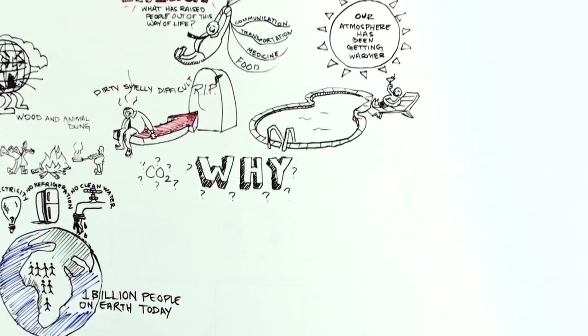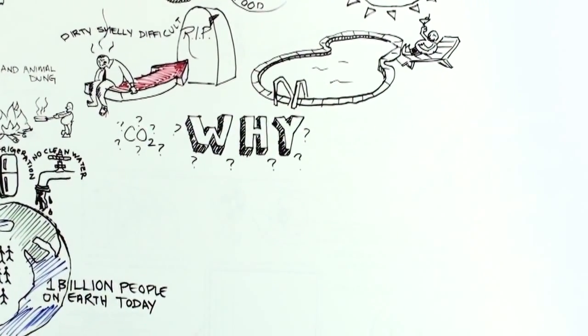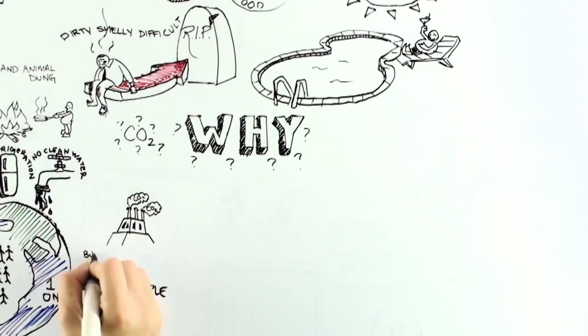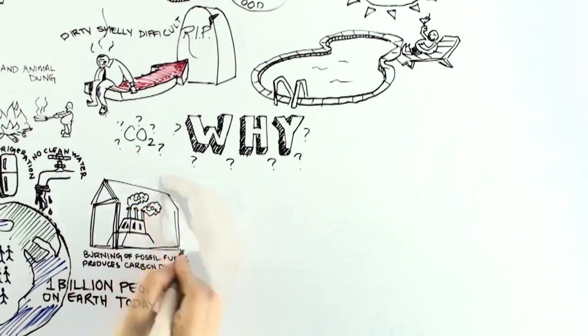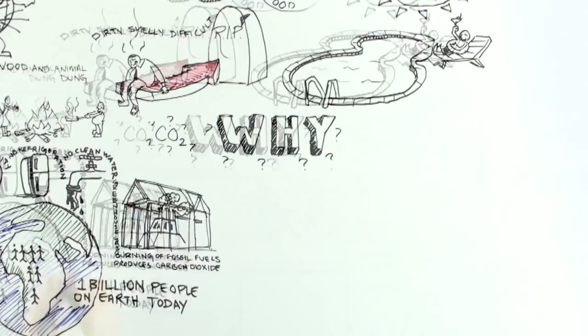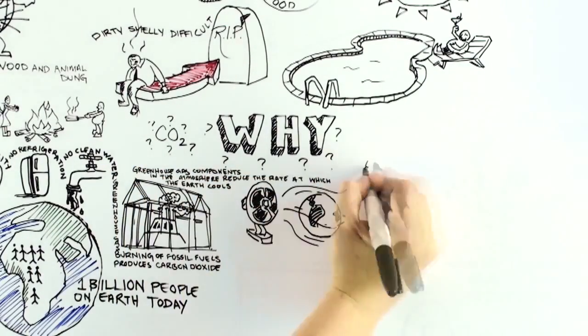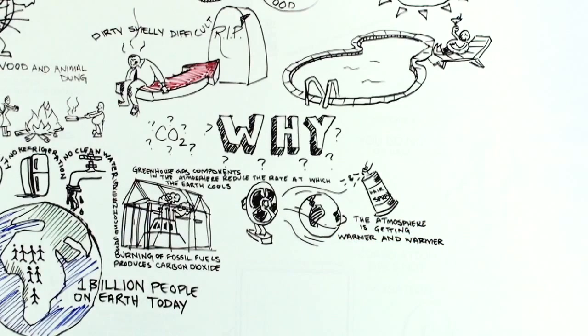Many scientists claim that the warming is the result of our use of fossil fuels. In the case of climate change hysteria, the argument goes something like this: Burning of fossil fuels produces carbon dioxide, a greenhouse gas. Greenhouse components in the atmosphere reduce the rate at which the Earth cools to outer space through infrared radiation. We've been releasing more and more carbon dioxide, and the atmosphere has been getting warmer and warmer. The answer must be that the two events are related.